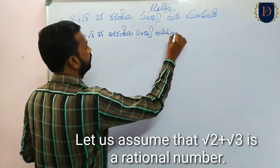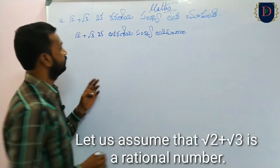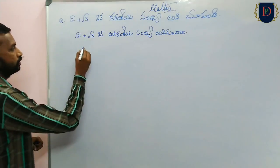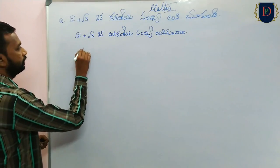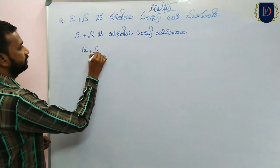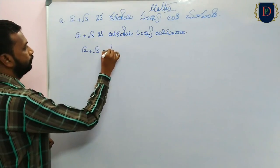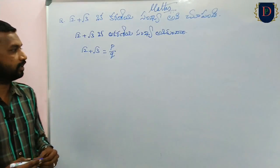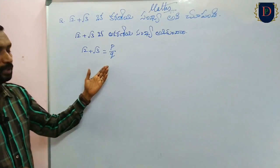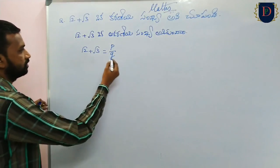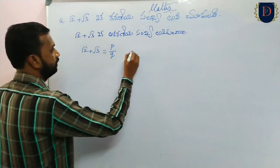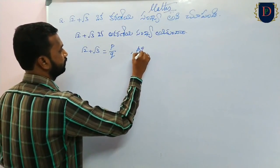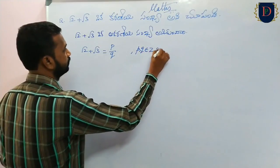We assume that root 2 plus root 3 is a rational number. So rational number p by q - we can write it in the form of p by q, where p and q belong to Z and q is not equal to 0.